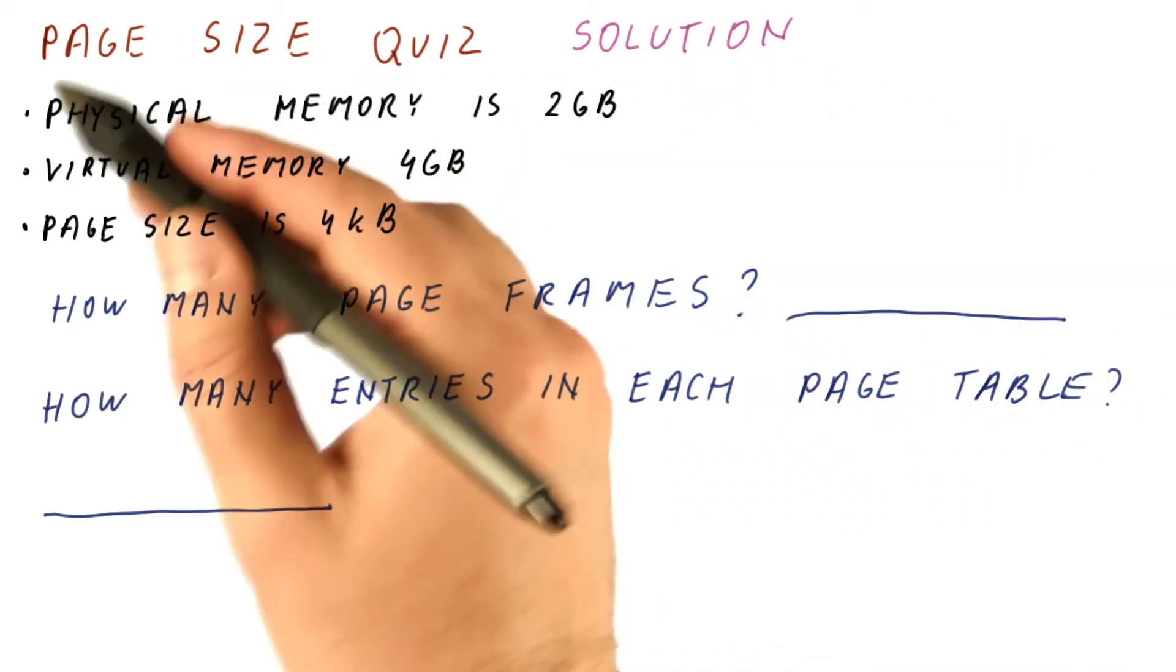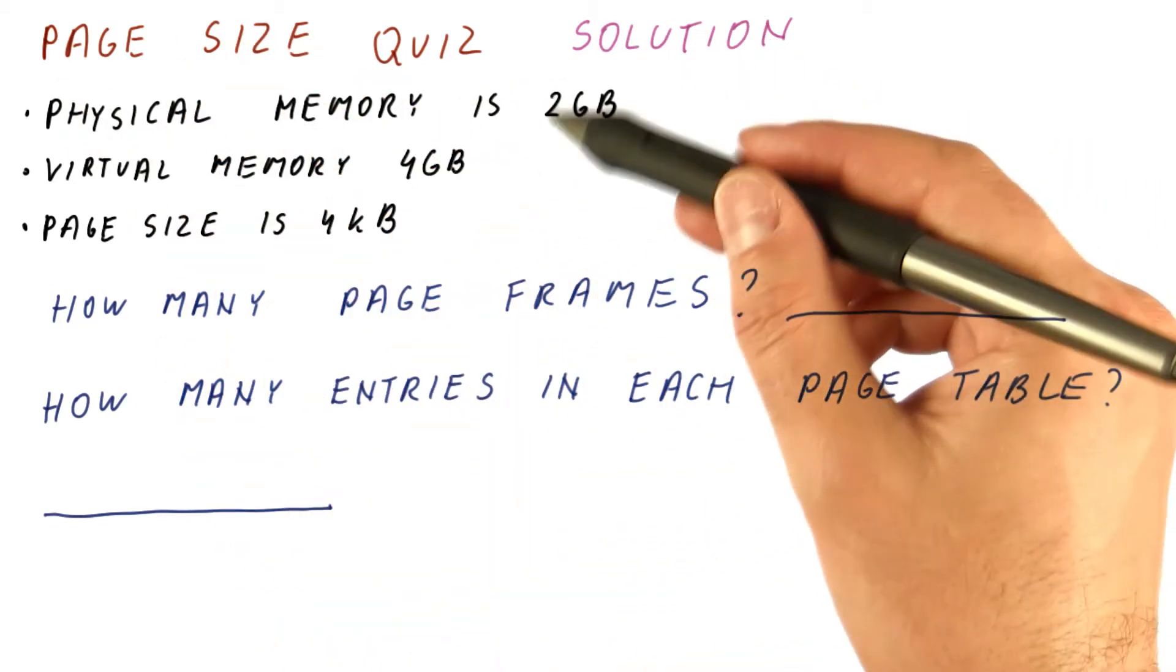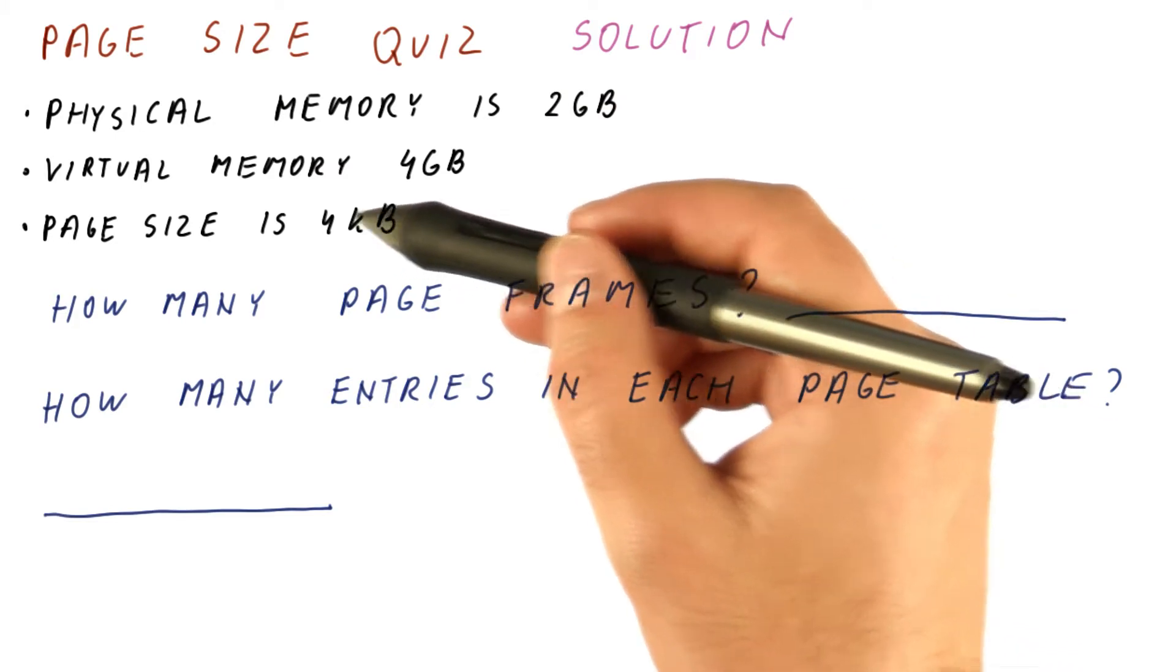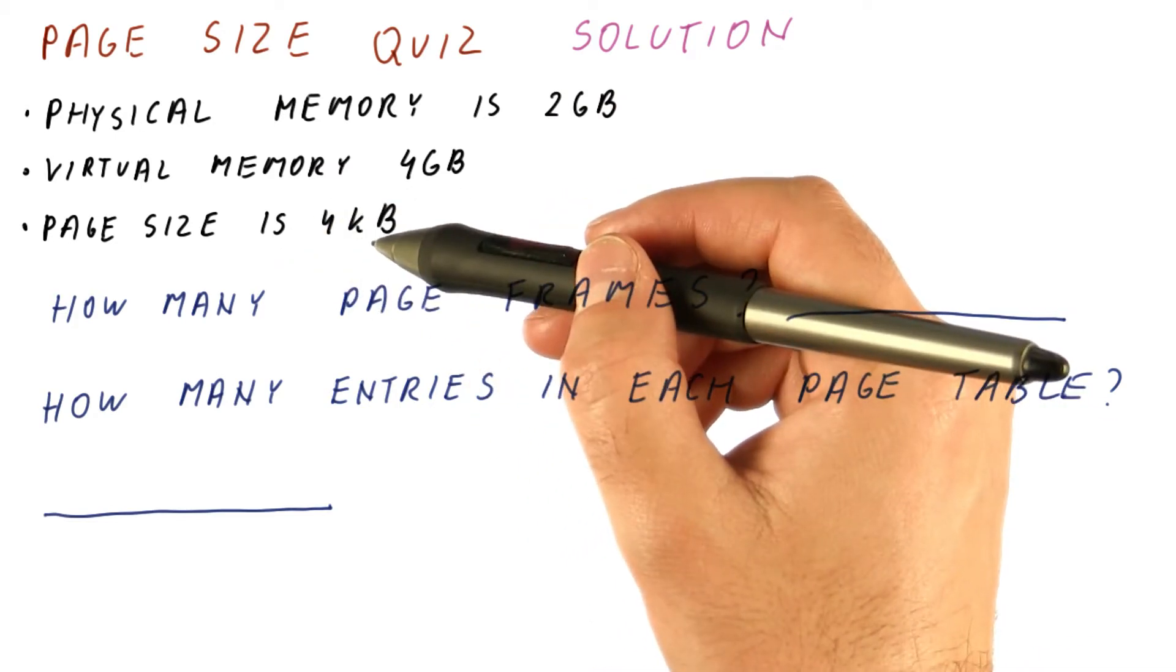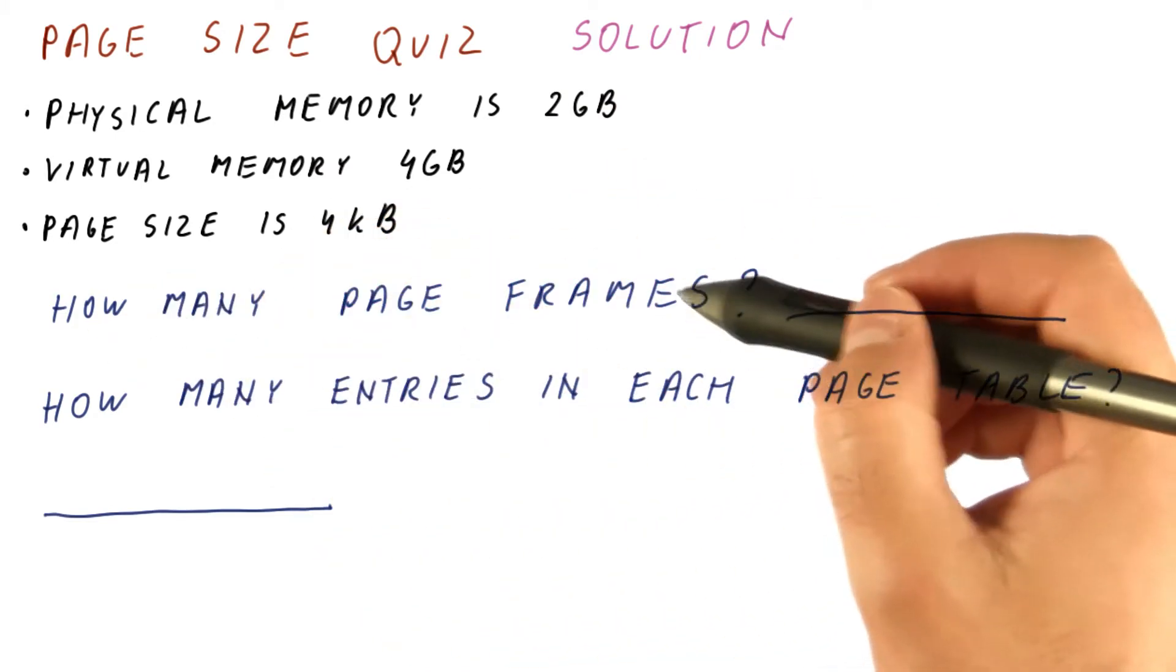Let's look at the solution to our page size quiz. Our physical memory is two gigabytes. Our page size is four kilobytes. How many page frames we have?